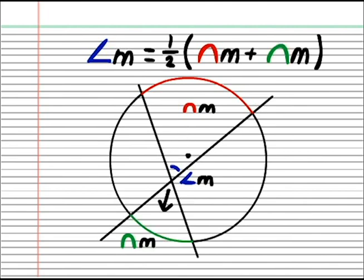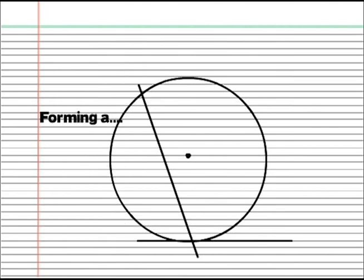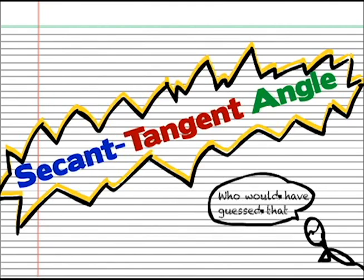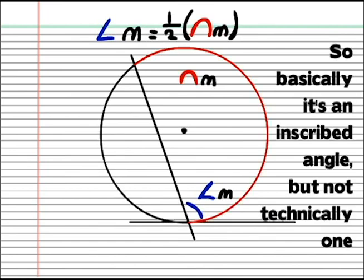When a secant and tangent intersect at a point of tangency, forming a secant tangent angle, who would have guessed that, the angle formed is half of the intercepted arc. So basically, it's an inscribed angle, but not technically one.